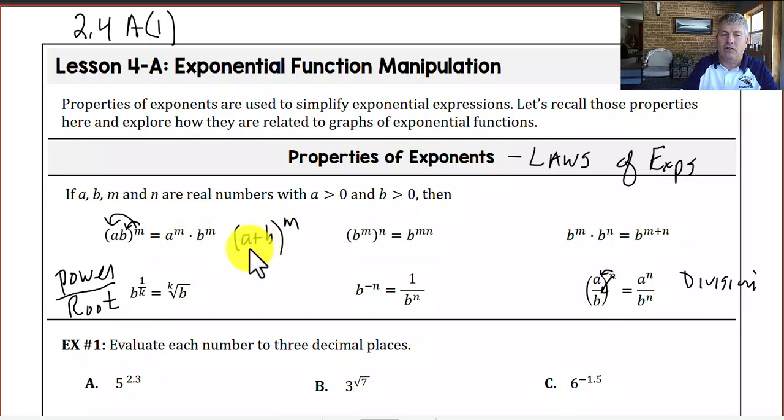However, when you have addition or subtraction, you may not distribute that m. That is a huge no-no. We cannot do that if we have addition or subtraction. In fact, that would be a binomial expansion, which we just recently studied.